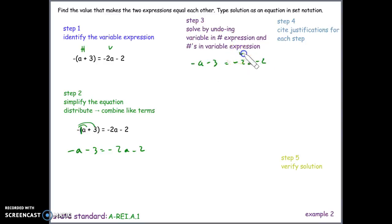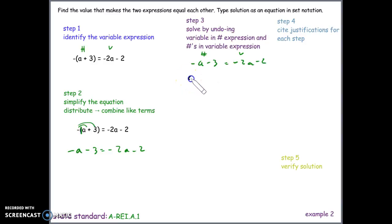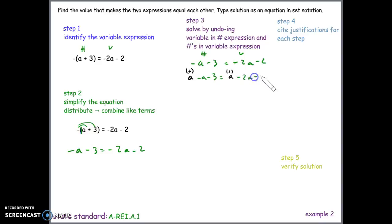We now have negative a minus 3 equals negative 2a minus 2. The right side is our variable side; the left is our number side. To eliminate the variable from the number side, since negative a is being subtracted, we add a to both sides. Adding a to both sides gives us: a minus a is zero, so the left becomes just negative 3, and the right becomes a minus 2a.